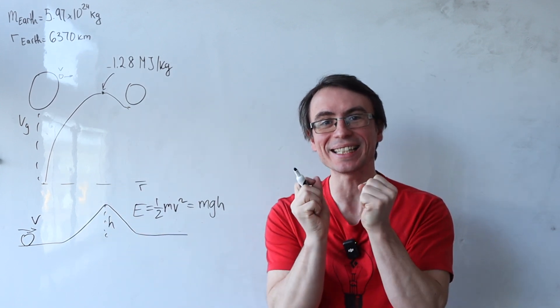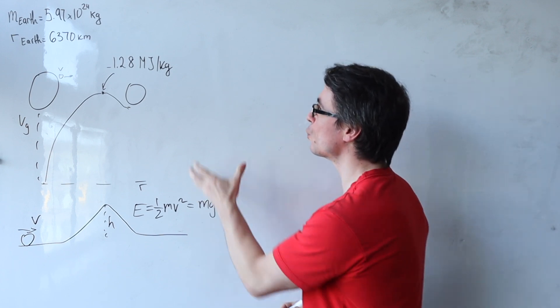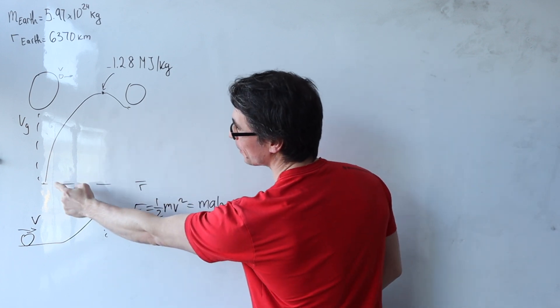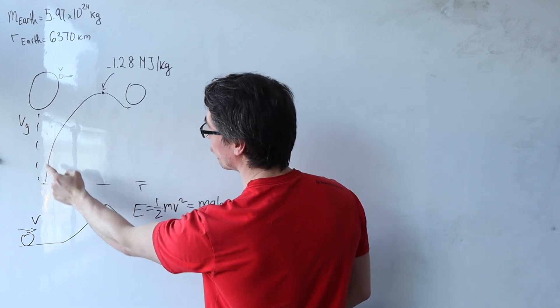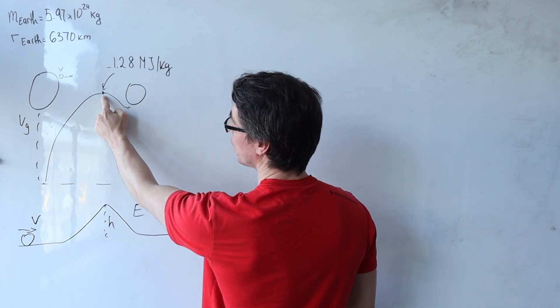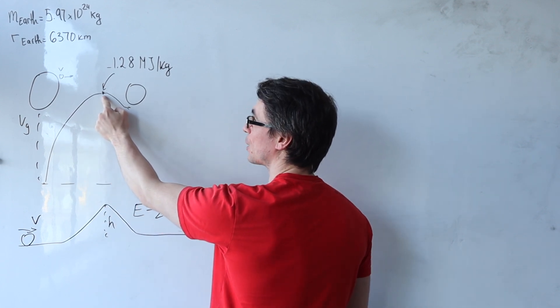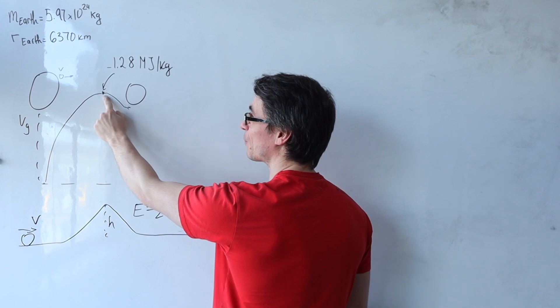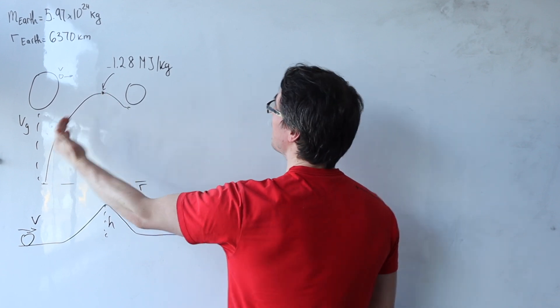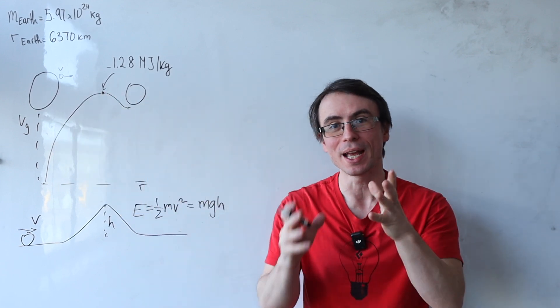We could use exactly the same thinking to figure out the minimum speed that it would take if we were to throw something to reach the top of the gravitational potential and then still have enough speed to go over onto the other side, be attracted towards the Moon and reach it.